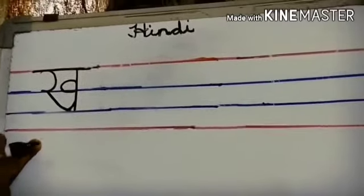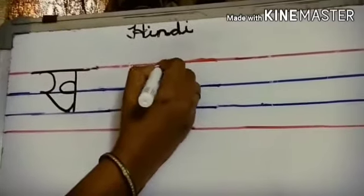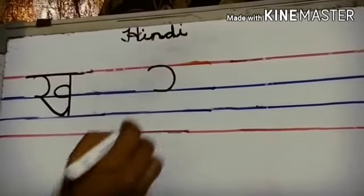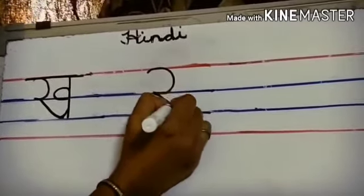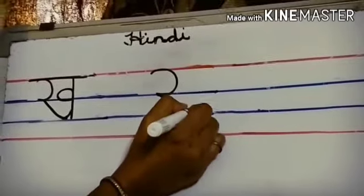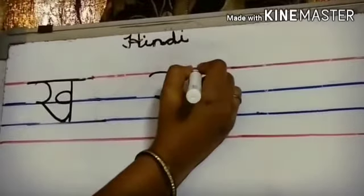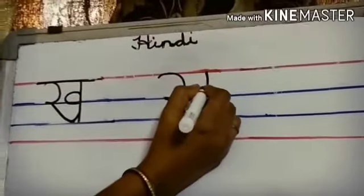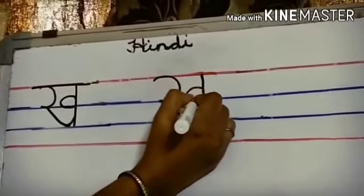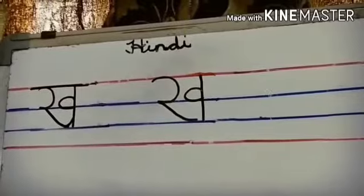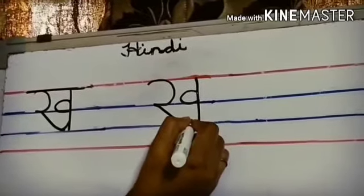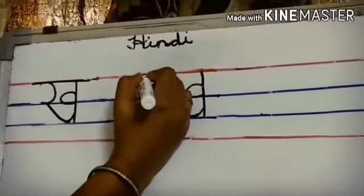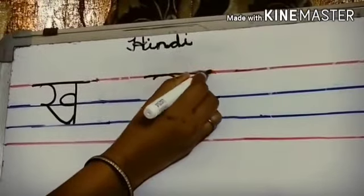Now I will show you how to write Kh. Draw a half circle. Join and draw a curve. Then draw a standing line. In the middle, draw a half circle. Join the curve to the standing line. And on the top, a sleeping line.